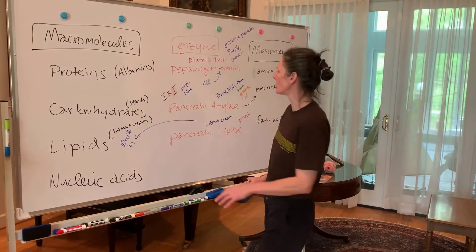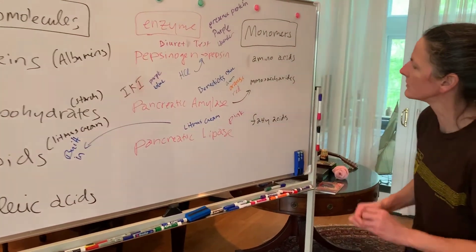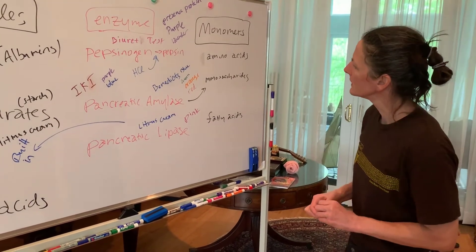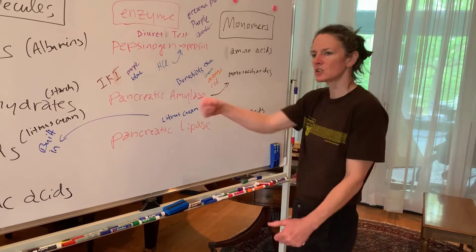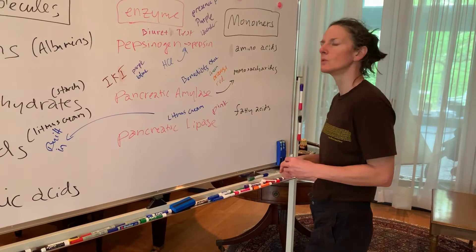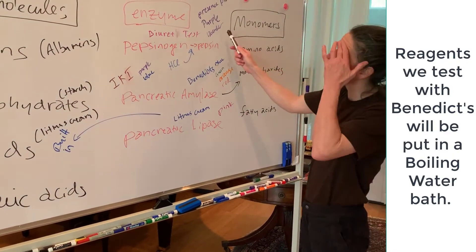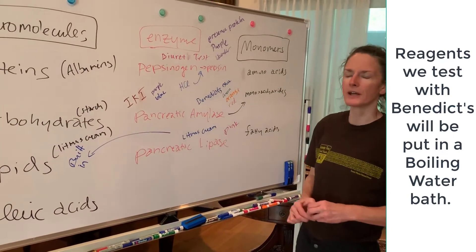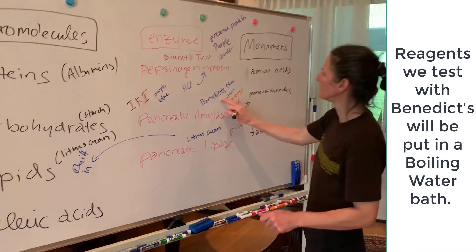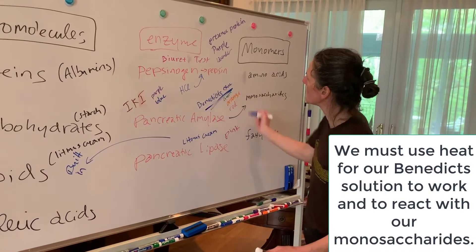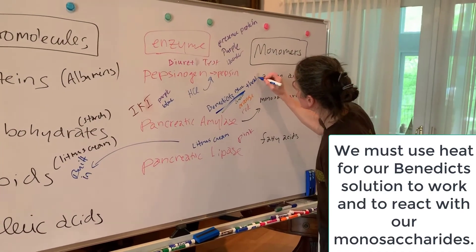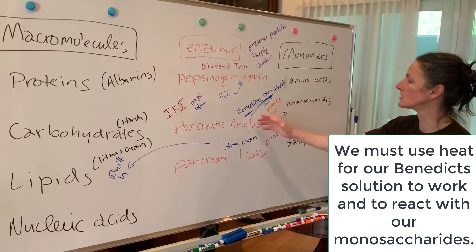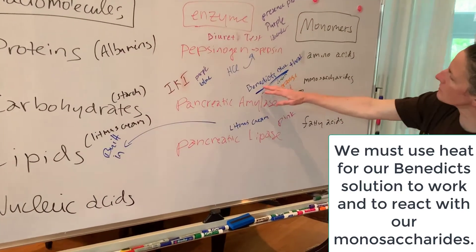For carbohydrate digestion, we put it in the water bath and use Benedict's solution. One important thing about Benedict's solution is that it requires heat to activate — you can't just add Benedict's and expect it to work. We put the tubes in a flask on a hot plate at a much higher temperature than the 37-degree incubator. Without heat, Benedict's solution will not work as an indicator.